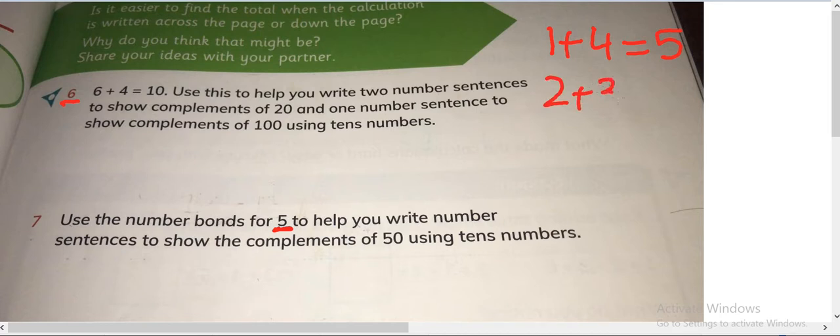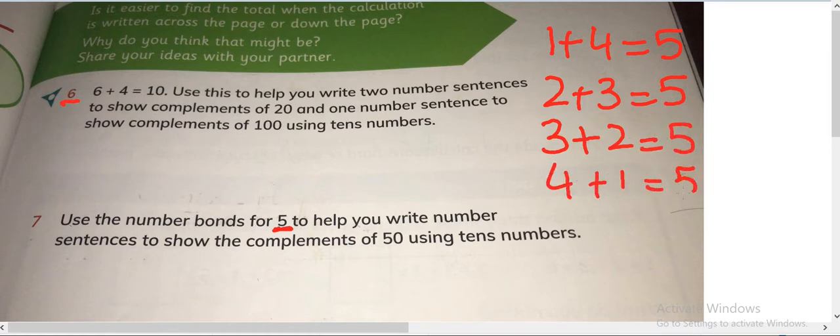2 plus 3 is equals to 5, 3 plus 2 is equals to 5, and 4 plus 1 is equals to 5. You also can write 0 plus 5 is equals to 5, but it's okay.